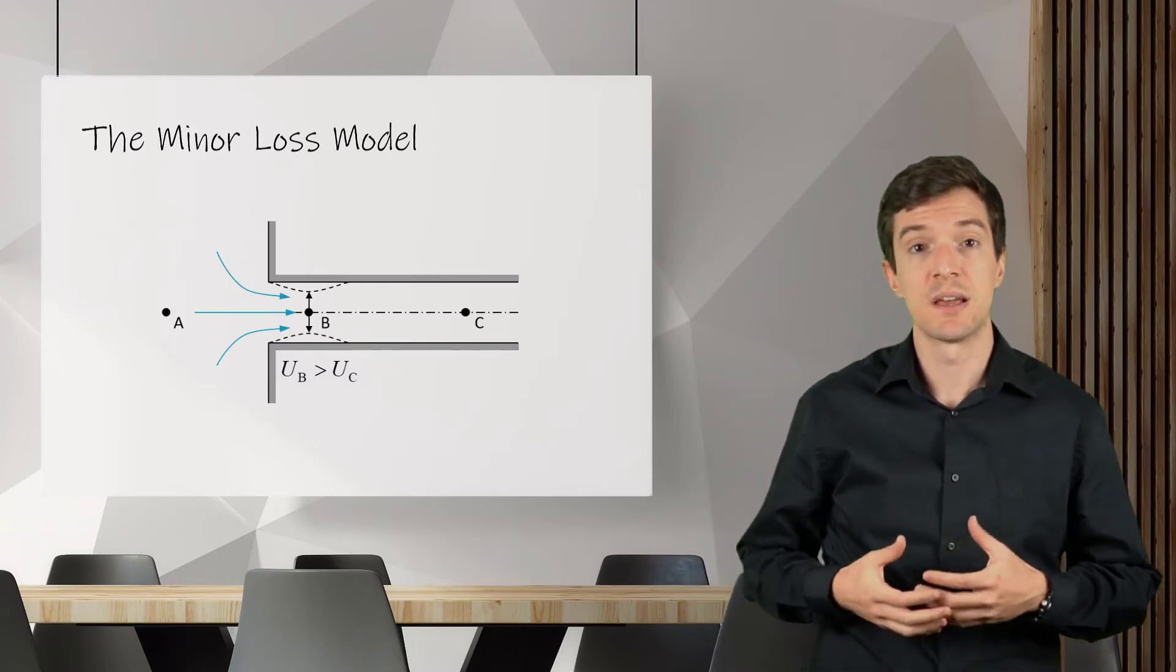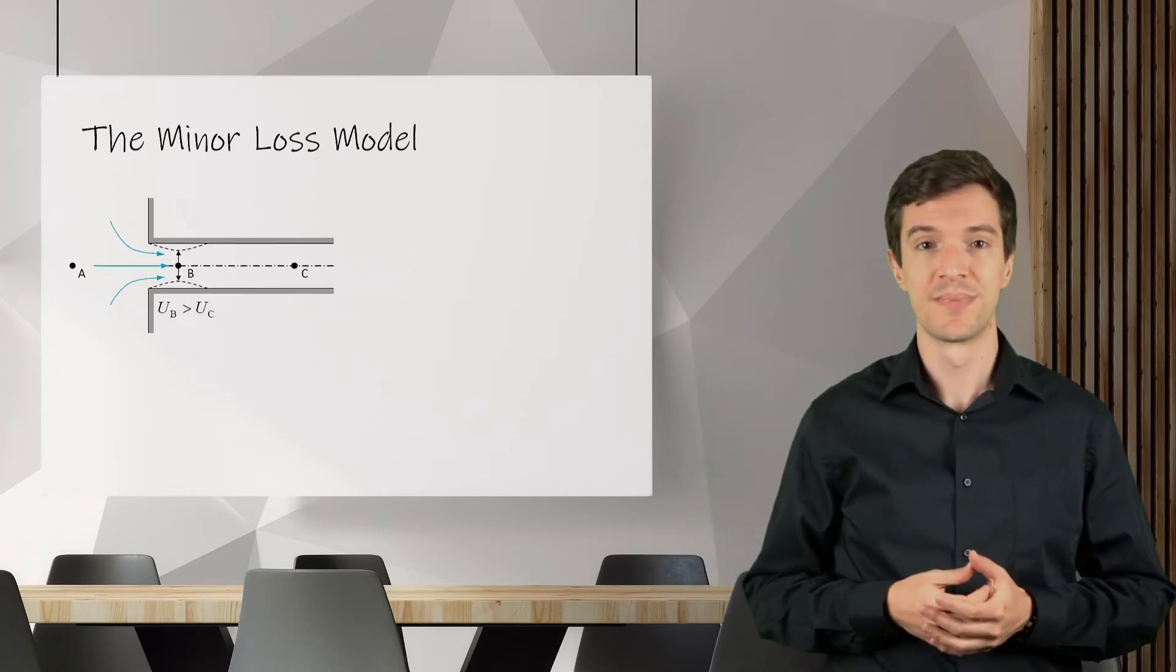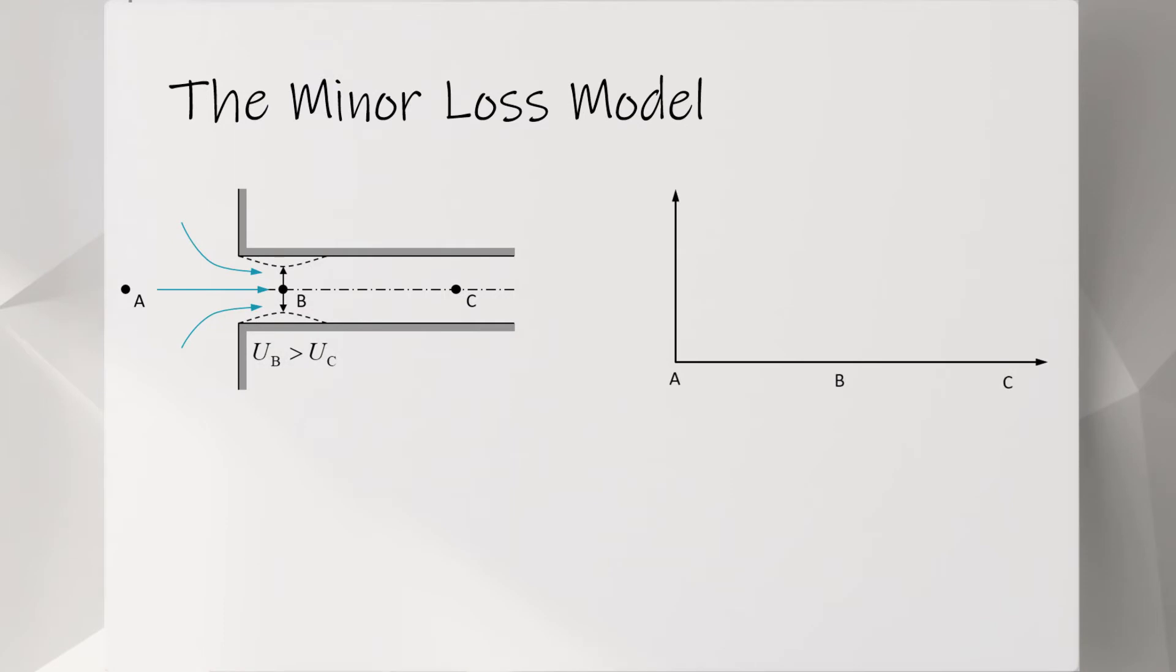If we analyze the pressure at different locations A, B and C, we can see that the pressure in point A drops as we reach point B. This is because the fluid accelerates as it enters the pipe. Then the fluid slows back down as we reach location C to the velocity it will maintain along the rest of the pipe. The deceleration will create a pressure rise in the flow. What we see here in the graph is the ideal condition where the flow will slow down without any loss.